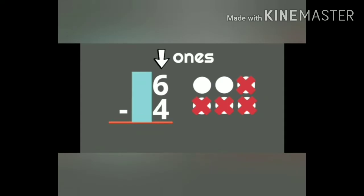Here we have 6 circles. Among that we have crossed or cancelled 4 circles. So how many remain? Yes, 2 circles are remaining. Answer is 2. 6 minus 4 is 2.